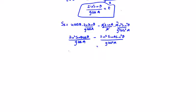We can factor out 2u squared sin theta from both terms, with g cos alpha on the denominator. That leaves cos theta minus sin alpha sin theta over cos alpha inside the bracket.